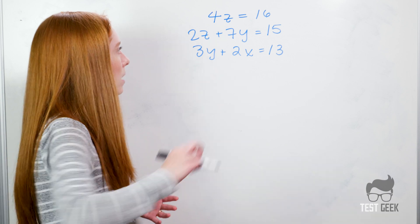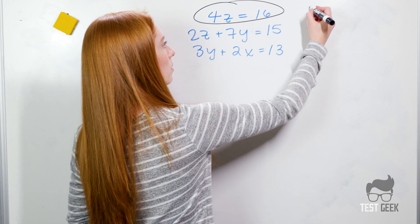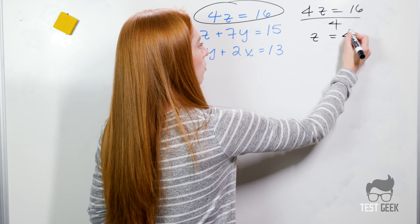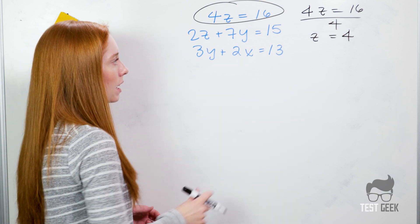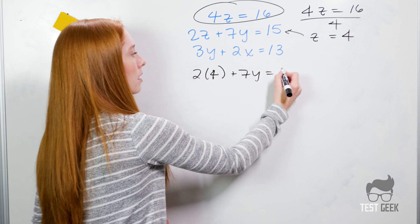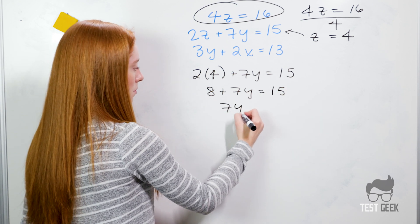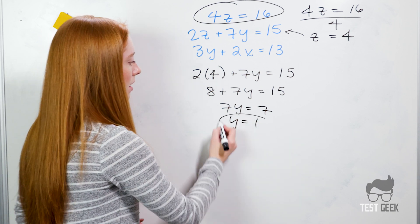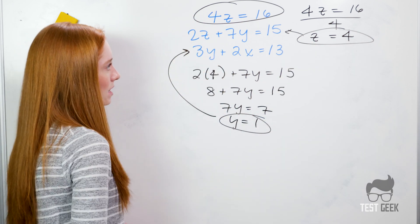The easiest equation has just one variable, so let's start by solving for z. 4z equals 16 — divide both sides by 4 and we get z equals 4. We've already solved for one of our three variables. Now let's plug z into the second equation: 2 times 4 plus 7y equals 15, so 8 plus 7y equals 15. Moving the 8 over, we get 7y equals 7, so y equals 1. We've now solved for two of our three variables.